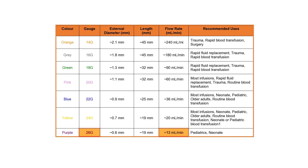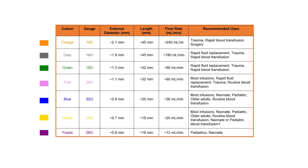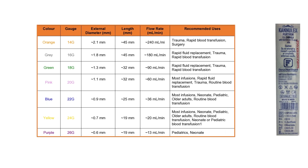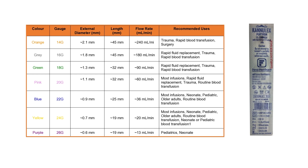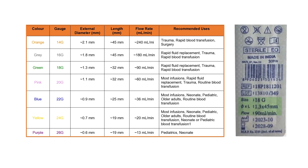IV cannulas are typically available in gauges 16, 18, 20, 22, 24, and 26. Gauges are represented with universal colour codes, and one or more IV cannula parts are colour coded for easy recognition. Refer to the blister packaging of an IV cannula for more information on the needle gauge, length, diameter, and flow rate.